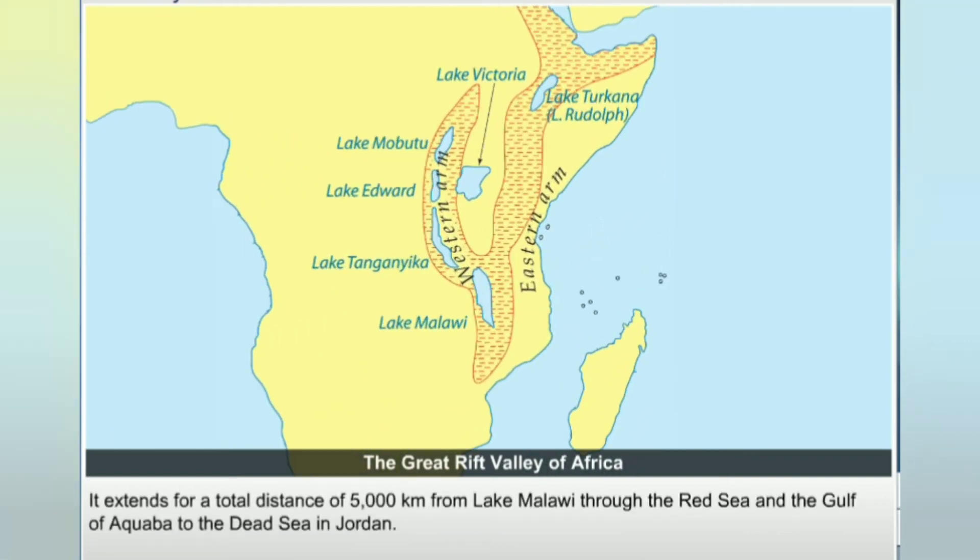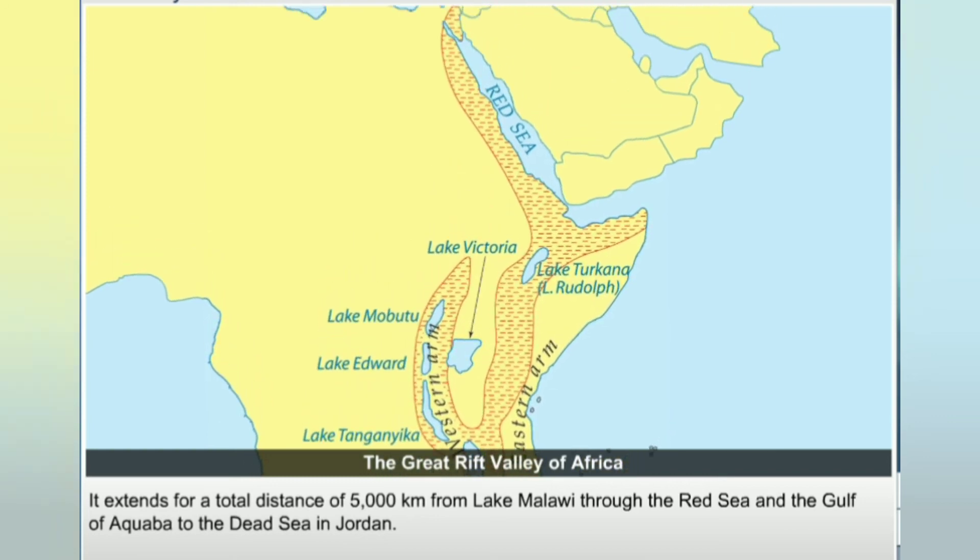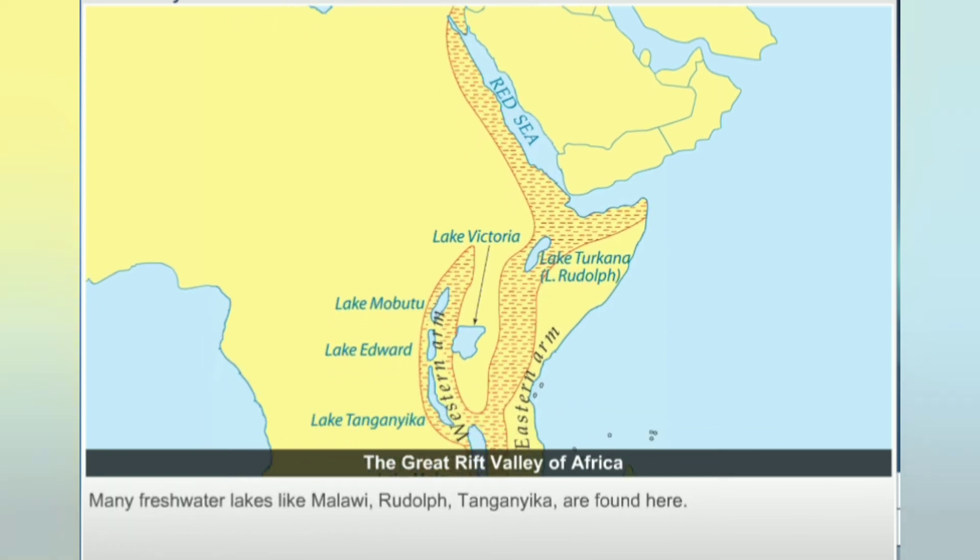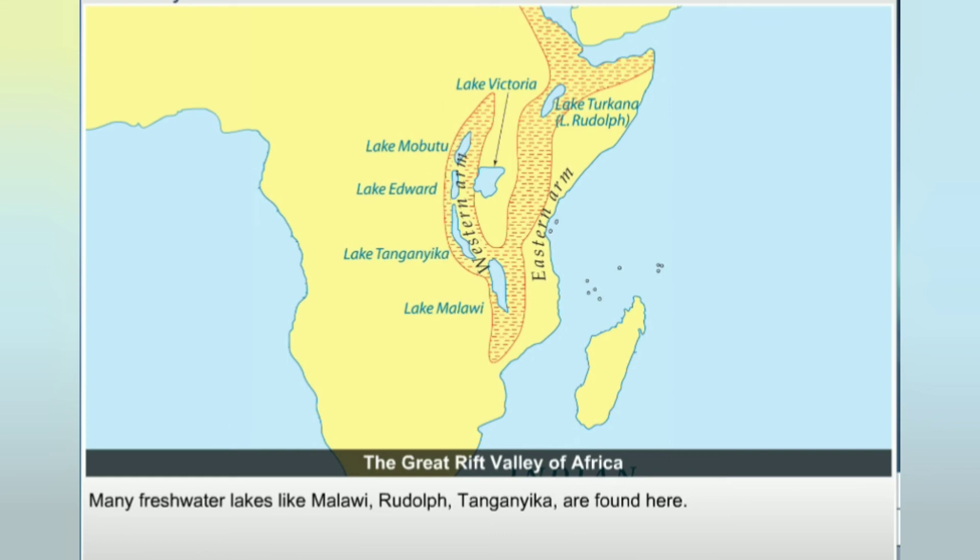It extends for a total distance of 5,000 km from Lake Malawi through the Red Sea and the Gulf of Aqaba to the Dead Sea in Jordan. Many freshwater lakes like Malawi, Rudolf, and Tanganyika are found here.